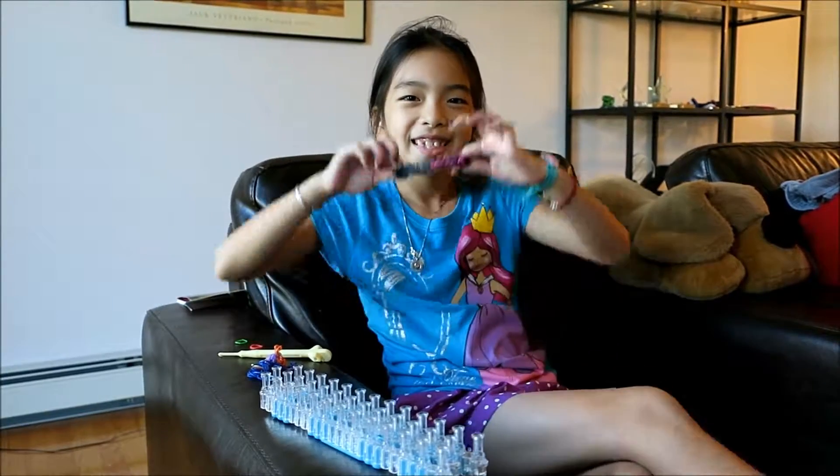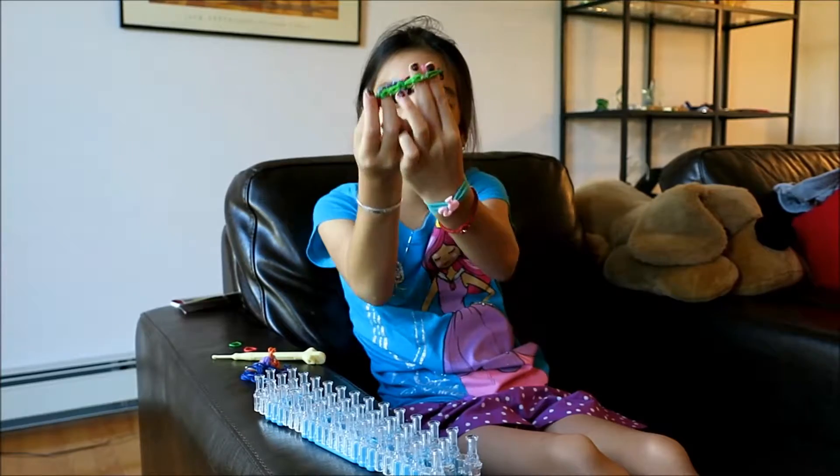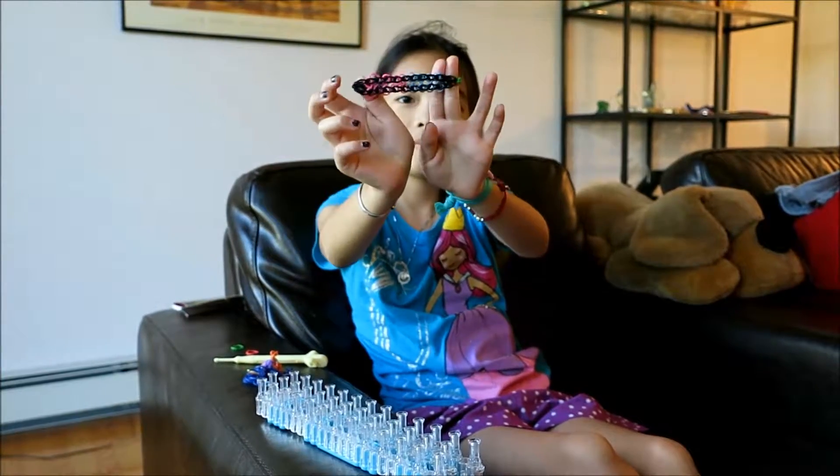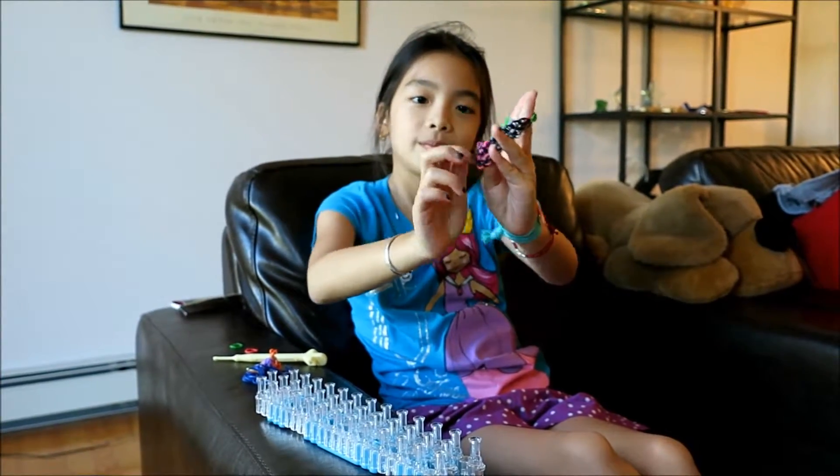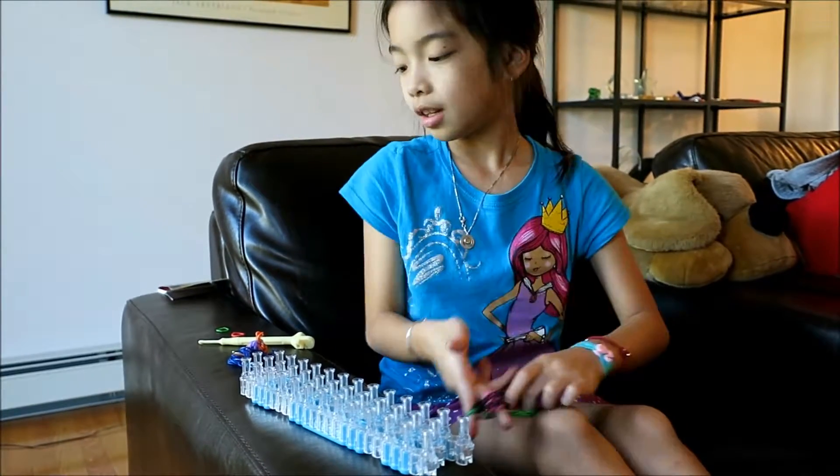I'm here with Eva and we're going to make an infinity bracelet that looks like this. It has a lot of colors in there. I'll be making a rainbow one, not like this, but it's going to have all the colors.